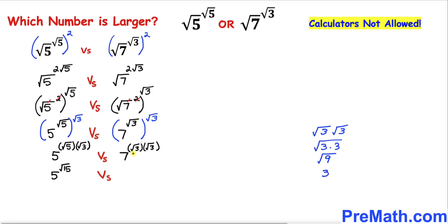On the right hand side, square root of 3 times square root of 3 is going to give us 3, so this number could be written as 7 raised to the power 3.